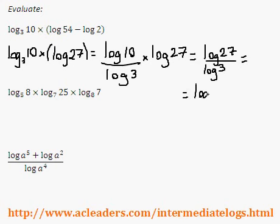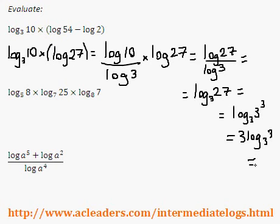Log 27 over log 3 is equivalent to log base 3 of 27. Now 27 is 3 to the 3, so I can actually bring the 3 down. 3 log 3 of 3 is equal to 1.